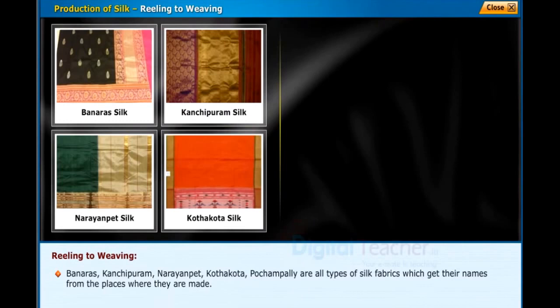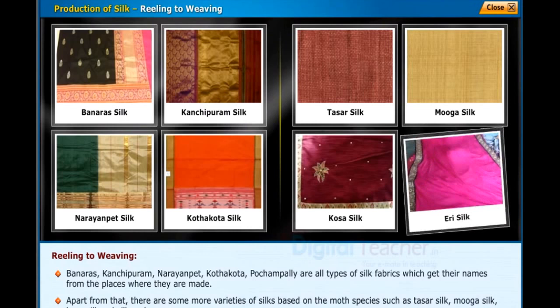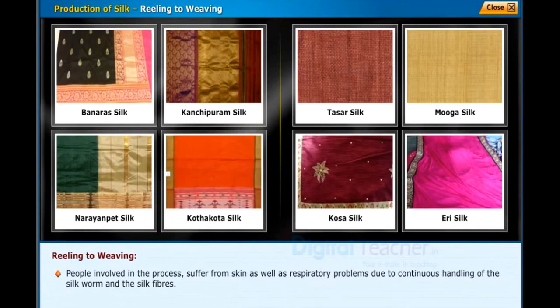Apart from that, there are more varieties of silk based on the moth species, such as tasar silk, mooga silk, kosa silk, eri silk, and so on. People involved in the process suffer from skin as well as respiratory problems due to continuous handling of the silkworm and silk fibers.